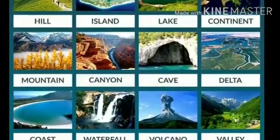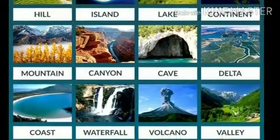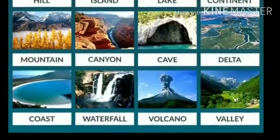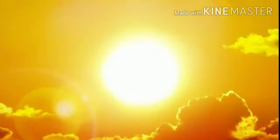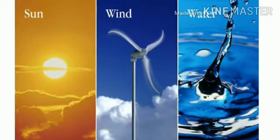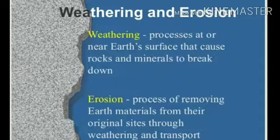In this lesson we'll be studying the exogenetic — that means the external — processes and the landforms formed by them. External processes occur because of forces working on the earth's surface. They are mainly solar energy, gravitational force, and the kinetic energy associated with moving objects on the earth's surface, for example wind.